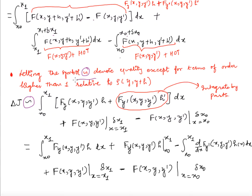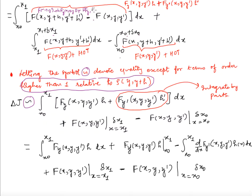Now applying Taylor expansion, f(x, y + h, y' + h') gives f(x, y, y') plus h·f_y(x, y, y') plus h'·f_{y'}(x, y, y'). The f terms cancel, leaving the integral from x₀ to x₁ of [f_y·h + f_{y'}·h'] dx.